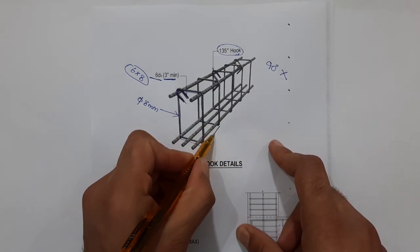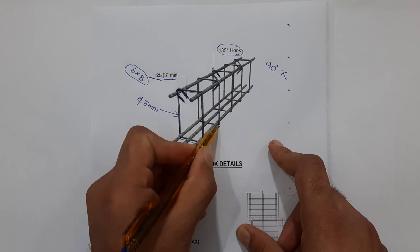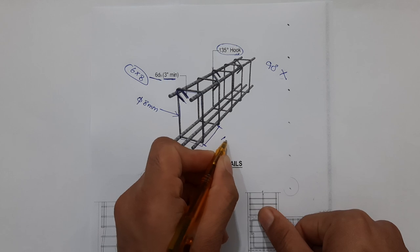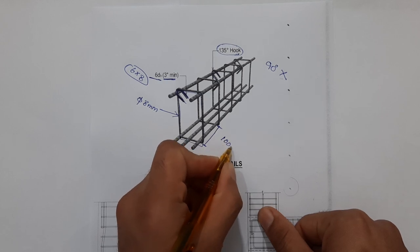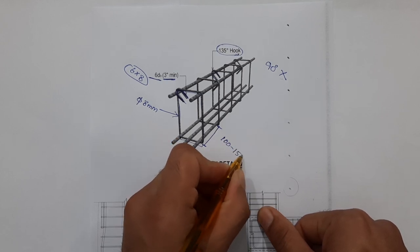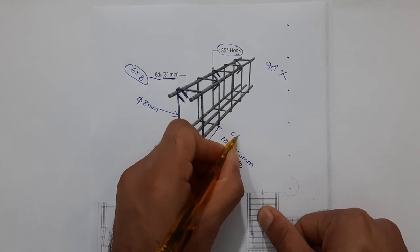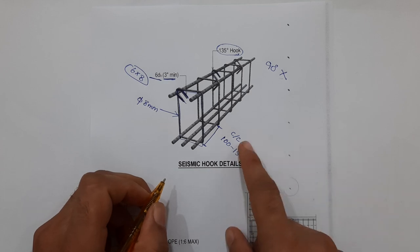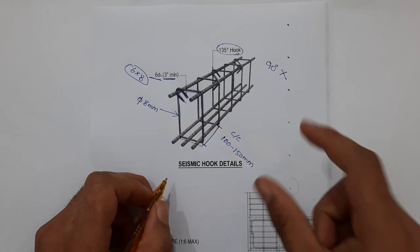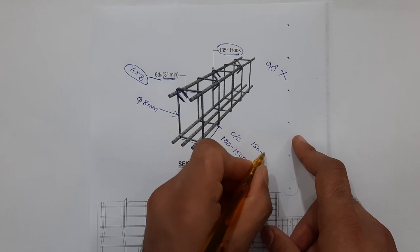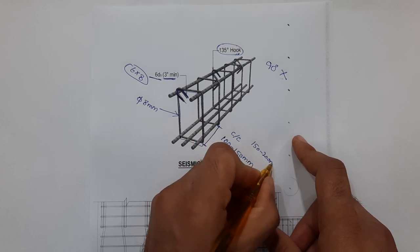What should be the spacing of stirrup? The spacing of stirrup should not be more than 100 to 150 millimeters center-to-center distance. But at the mid, you can increase from 150 to 200 millimeters.